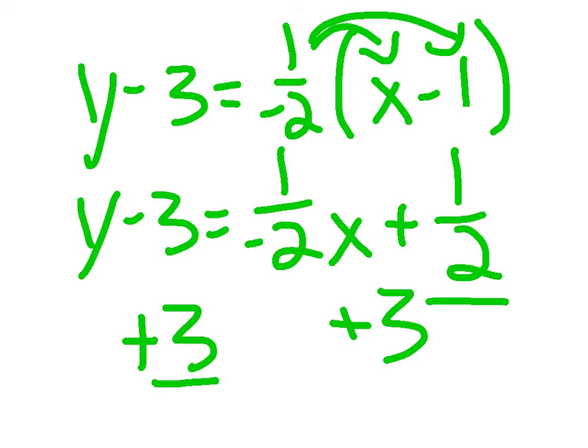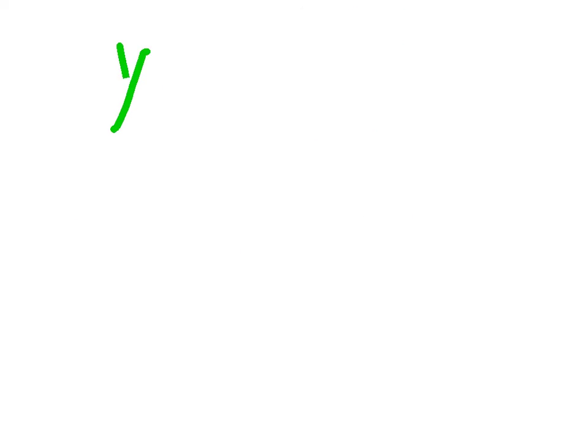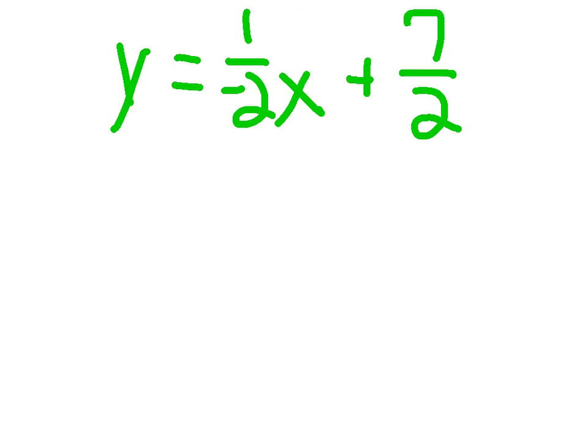So we get y equals negative 1 over 2x plus 7 over 2, because we added 6 over 2, which equals 3.